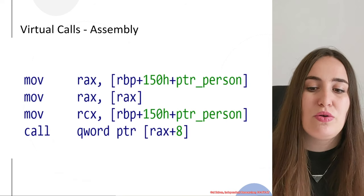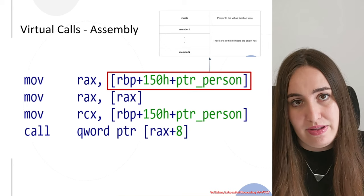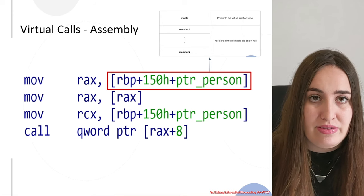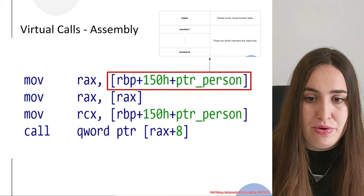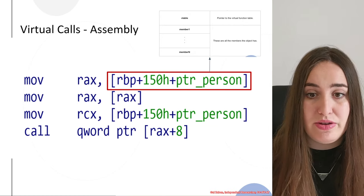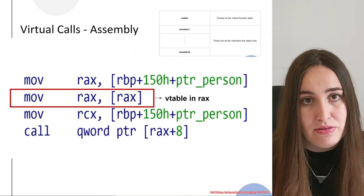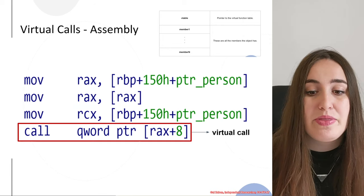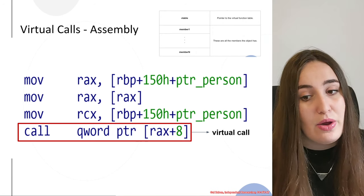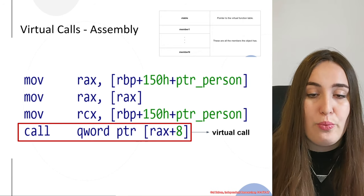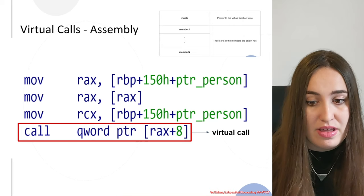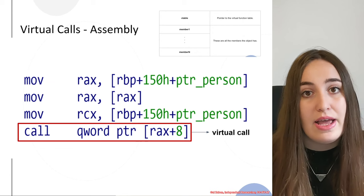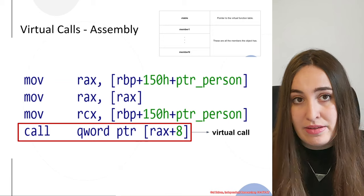If you want to examine the assembly: first we have the pointer to the person object, and the structure of the object has the vTable in the first eight bytes, with all the object's members stored afterwards. Then we have the assignment of the vTable to the first eight bytes of the object structure in memory — we can see that the vTable is stored in RAX. Later we can see the virtual call, which takes the vTable pointer and then accesses a specific offset — in this case offset eight — and calls that function.